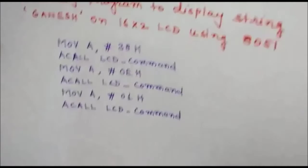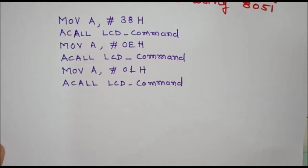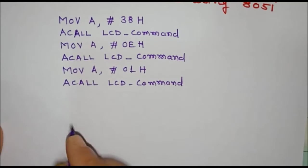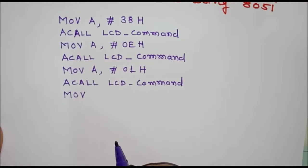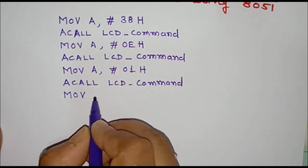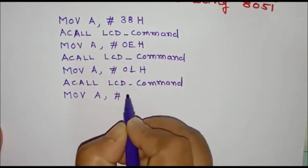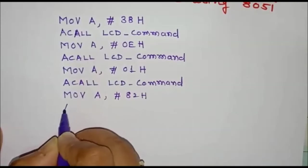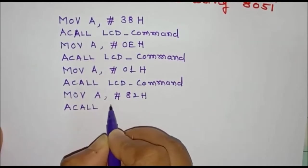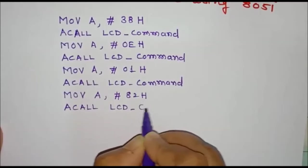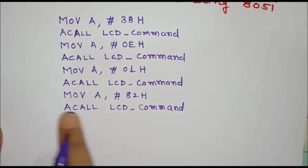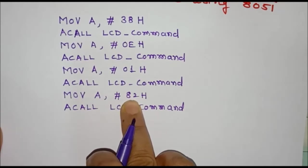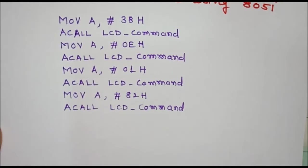If we want to display a string at a particular character position, we can use a command for that. For example, if we want to display the 'Ganesh' string starting from character address 82H, we store 82H in the accumulator and call LCD_command again. The first character of the string will then be displayed from character address 82H on the LCD.